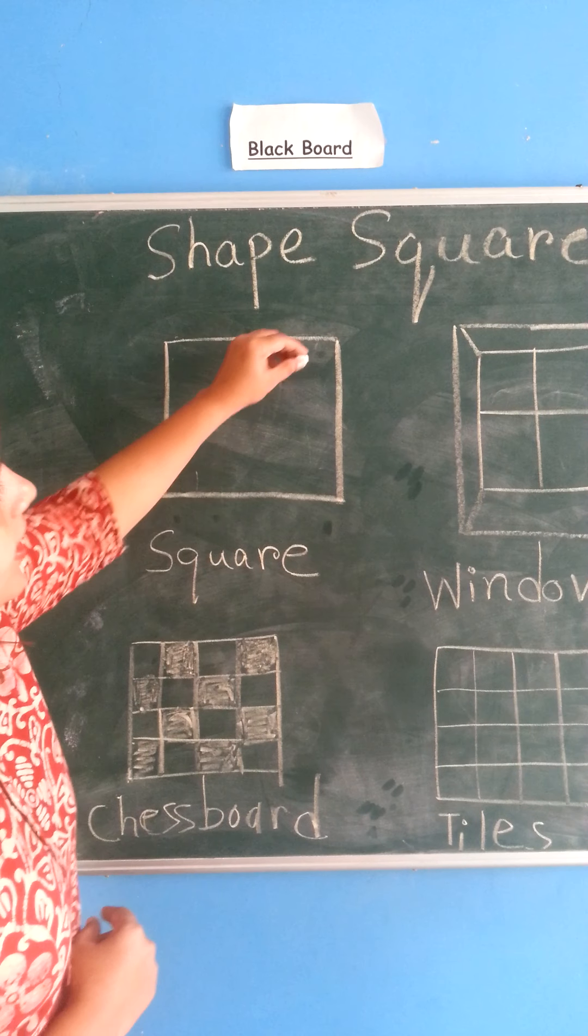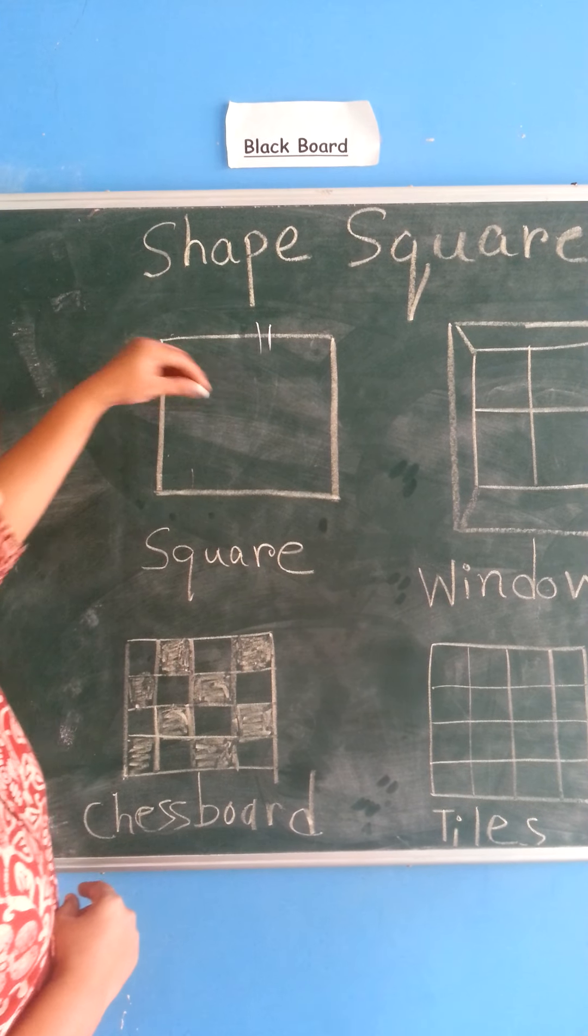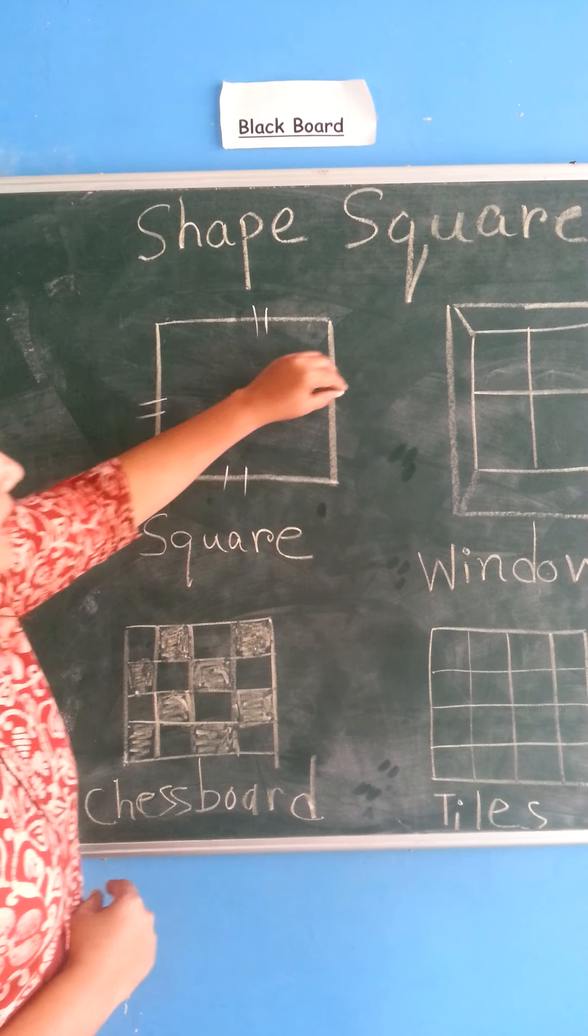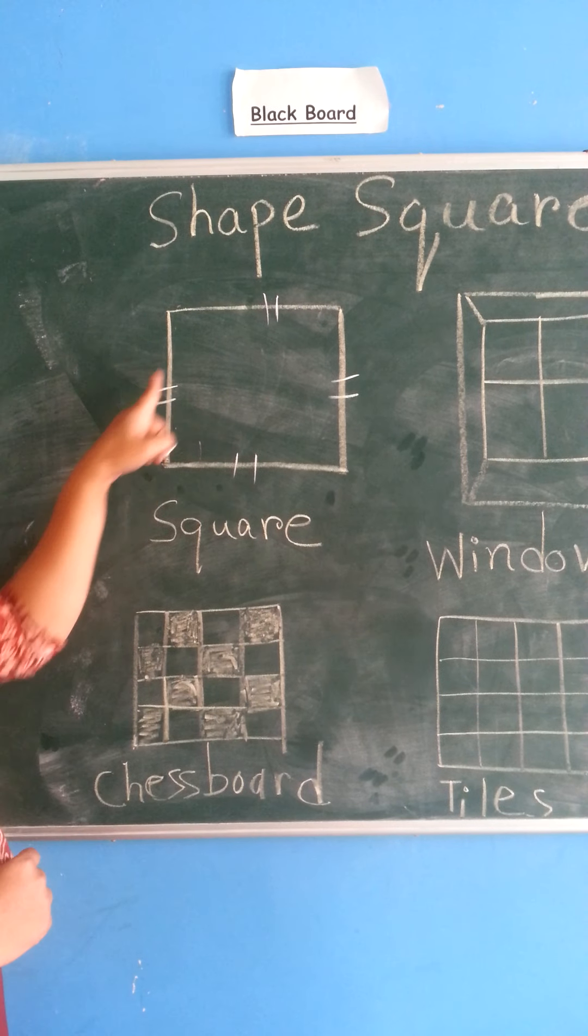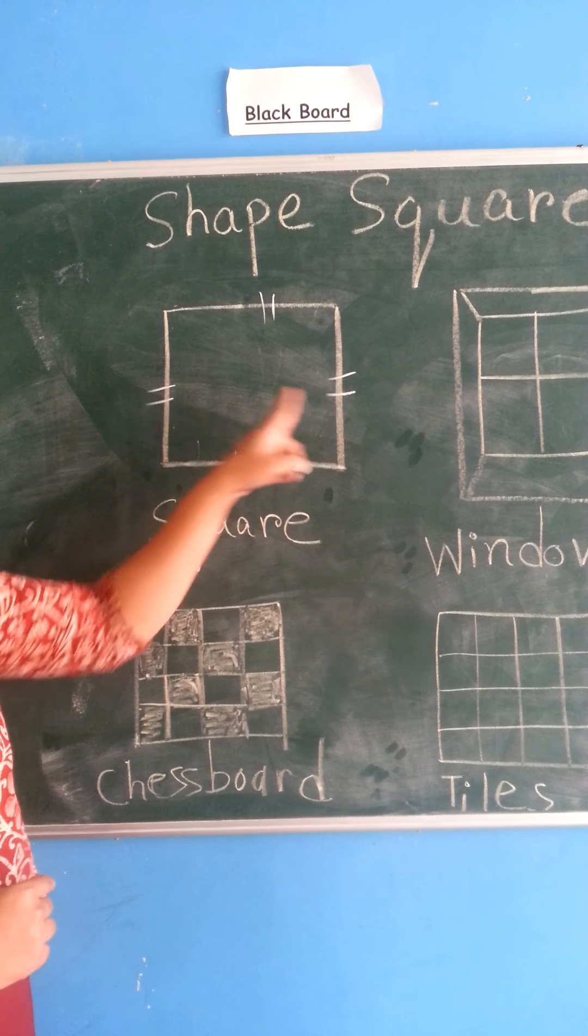Four equal sides hoti hai. See this? One side, two side, three side, four side. So square has four equal sides and four corners.